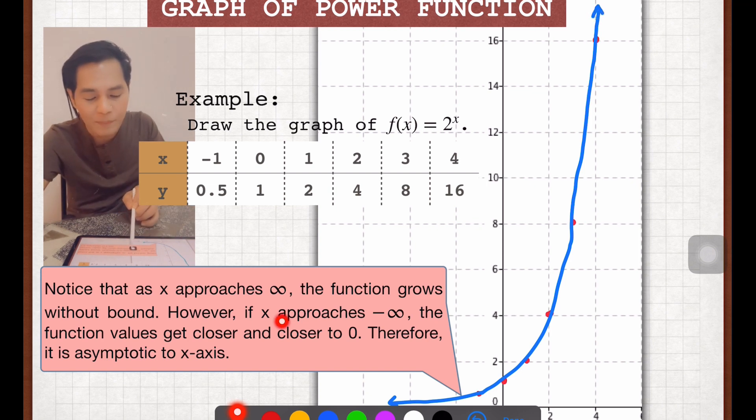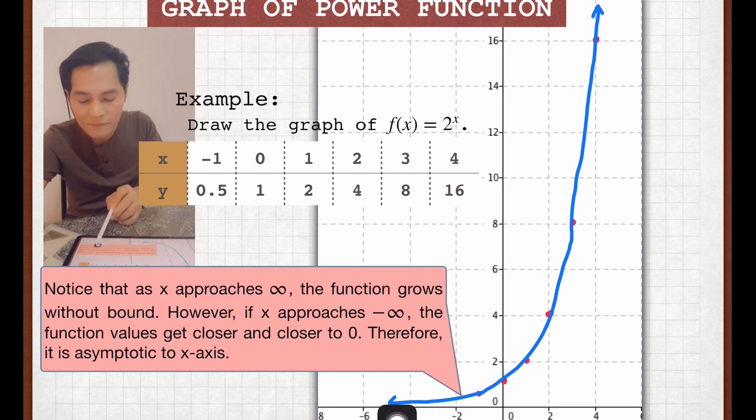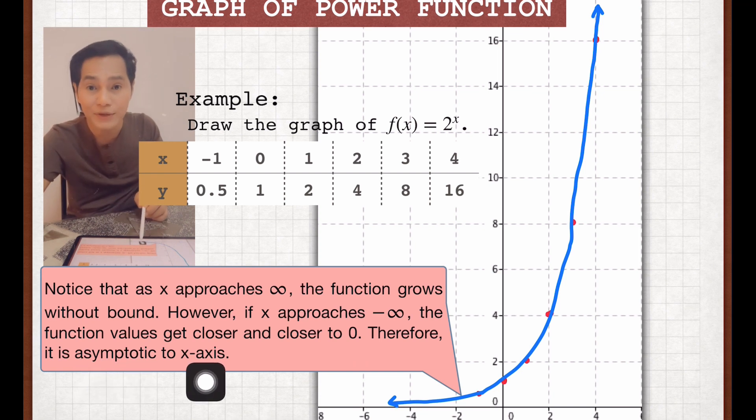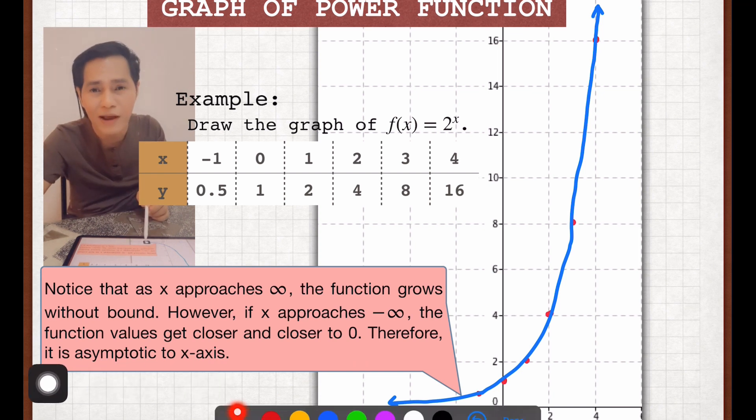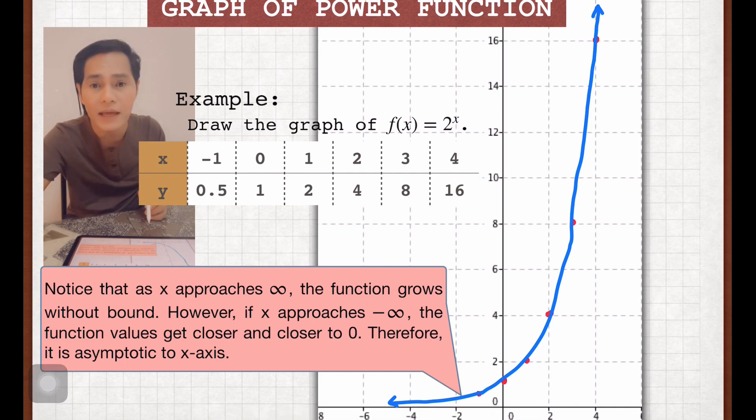However, if x approaches negative infinity, look at the arrow here, the function values get closer and closer to 0. Therefore, it is asymptotic to the x-axis. Asymptotic meaning very close to the x-axis, but not approaching or touching the x-axis.